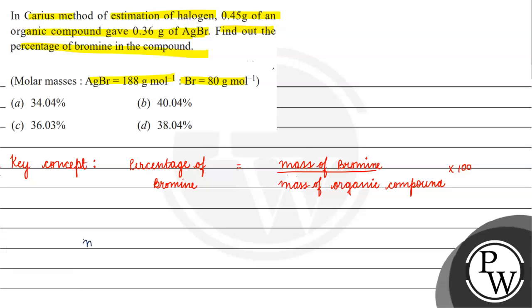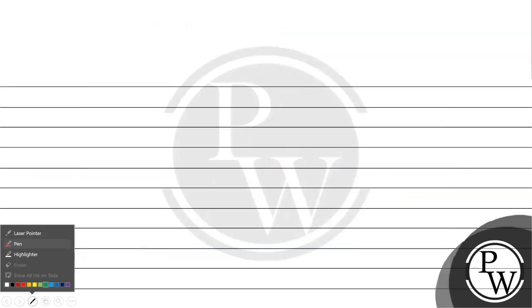If we take it, moles of AgBr. How much will it be? It will be 0.36 gram by 188 gram per mole. This will basically come out to be 0.0019 moles. Moles of AgBr.